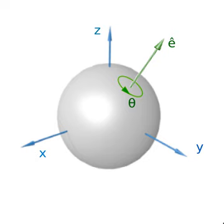There are no non-trivial rotations in one dimension. In two dimensions, only a single angle is needed to specify a rotation about the origin — the angle of rotation that specifies an element of the circle group, also known as U(1). The rotation acts to rotate an object counterclockwise through an angle theta about the origin. Composition of rotations sums their angles modulo 1 turn, which implies that all two-dimensional rotations about the same point commute. Rotations about different points, in general, do not commute. Any two-dimensional direct motion is either a translation or a rotation.